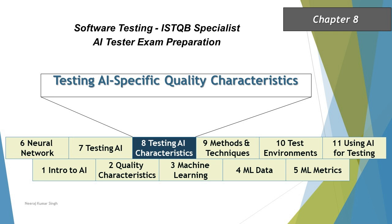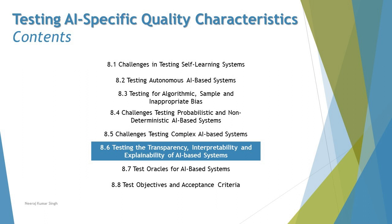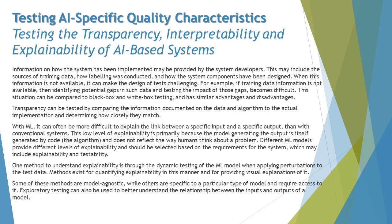Hello friends, greetings for the day. Welcome back to another tutorial on ISTQB AI Tester Certification. We are in Chapter 8, talking about testing AI-specific quality characteristics, moving on to segment 8.6: testing the transparency, interpretability, and explainability of AI-based systems. What we are trying to understand is what exactly it takes to test these parameters.